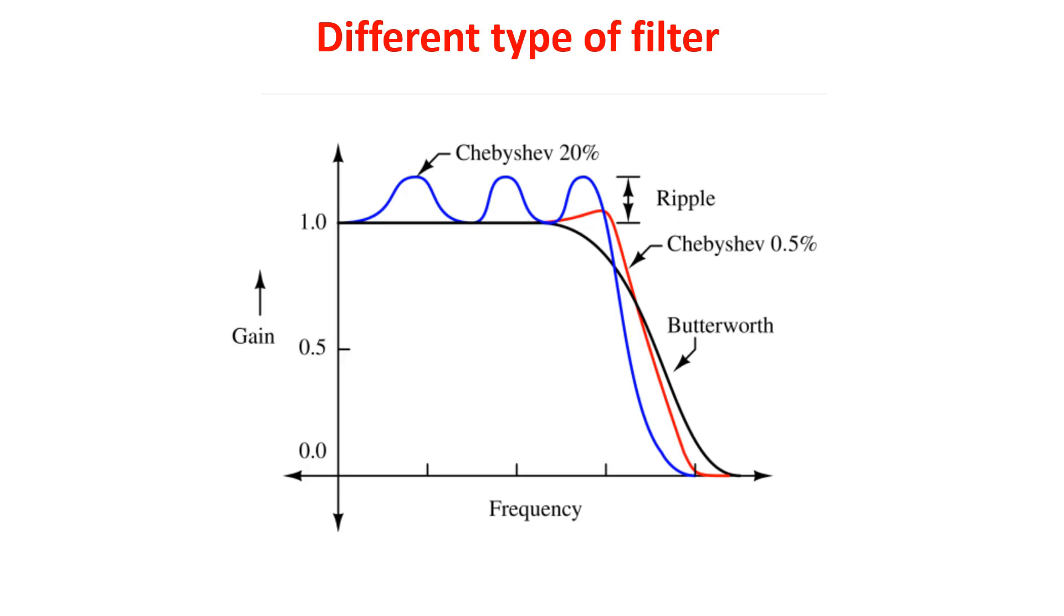You see the Butterworth is designed to have a frequency response as flat as possible in the passband. But the phase linearity is not good and the slope around the cutoff frequency is flatter.